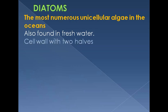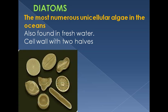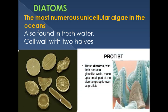A very unique feature of diatoms is their cell wall, which has two valves — two halves — just like a petri dish. If you have seen a petri dish in the lab, it is a pair of dishes where one covers the other: the lid is larger and covers the smaller one. The cell wall of diatoms is the same arrangement. Diatoms have beautiful glass-like walls and make up a small part of a diverse group known as phytoplankton.